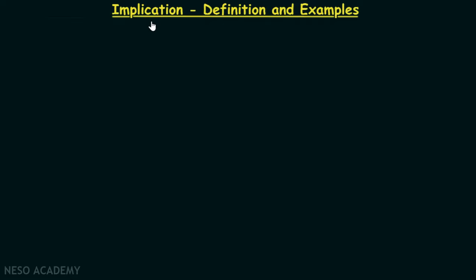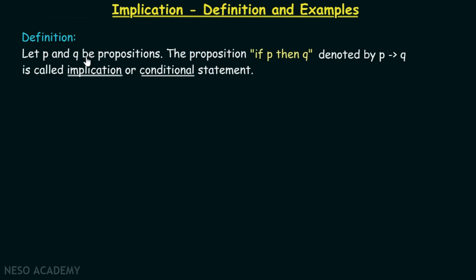In this presentation, we are going to talk about our next logical operator in propositional logic — that is implication. Now let's consider the definition of implication. What does it really mean? Let P and Q be two propositions. The proposition 'if P then Q', denoted by P implies Q, is called implication or conditional statement.